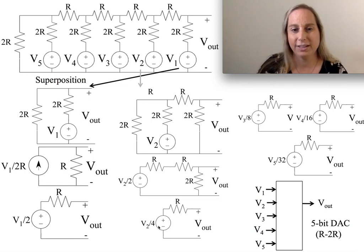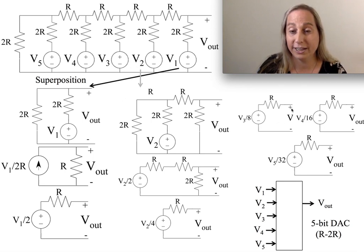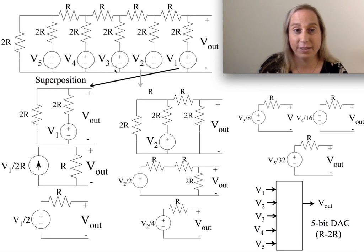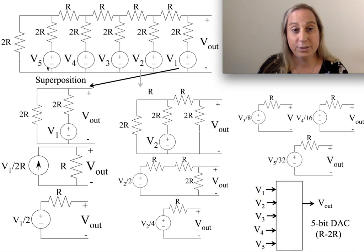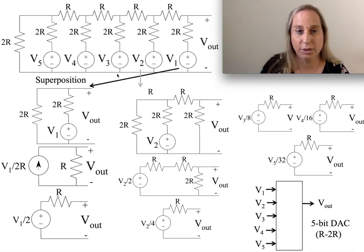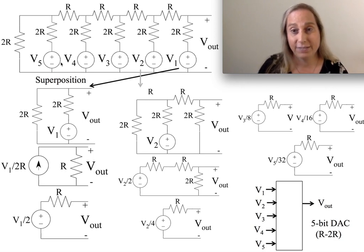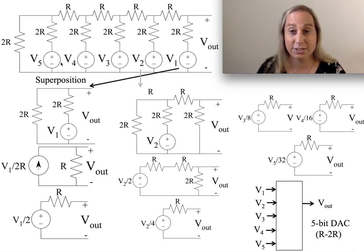I can repeat the same thing for V3 — that one on and the other four off — and I get V3/8. Then the next one gives V4/16, and V5 is over 32. As I keep working my way backwards: 2, 4, 8, 16, 32. If there were more stages, I would keep going to 64, 128, 256.